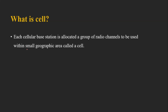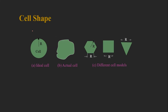An important part of the cellular concept is the cell itself. A cell is a small geographical area. Each cellular base station is allocated a group of radio channels to be used within a small geographical area called a cell. The cell is a geographical area with a defined set of radio channels used within that area.